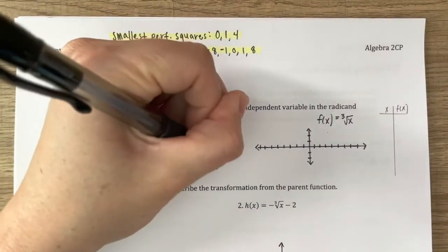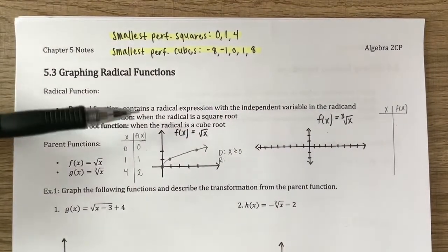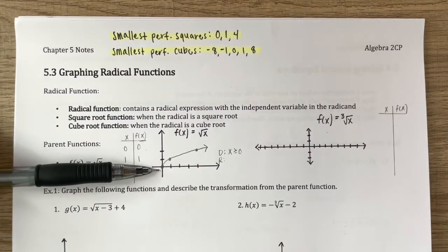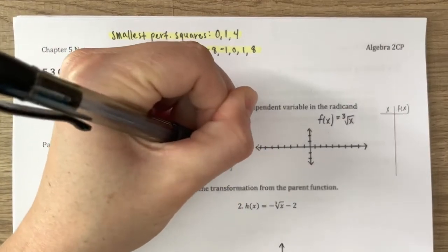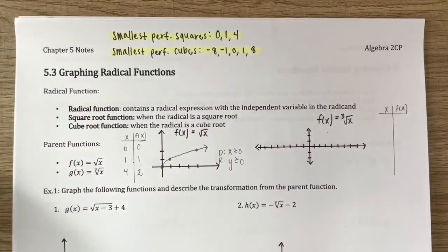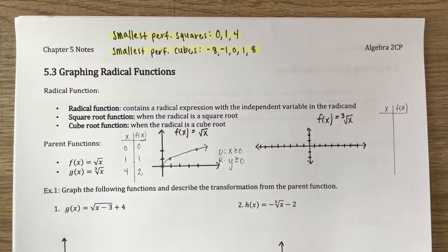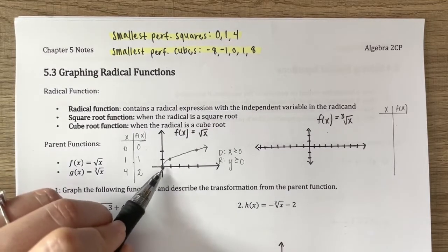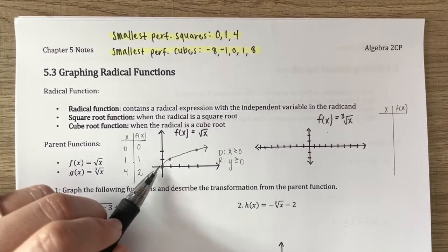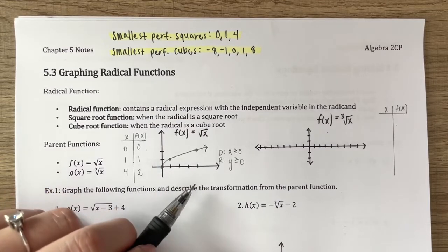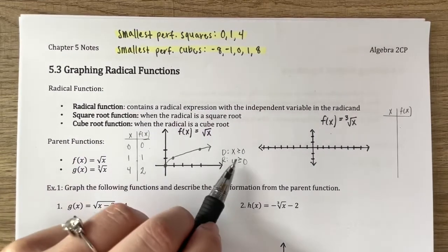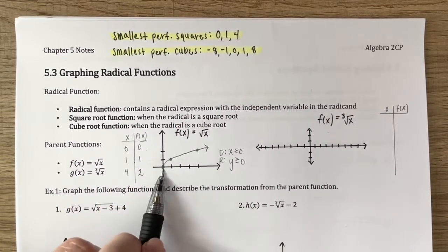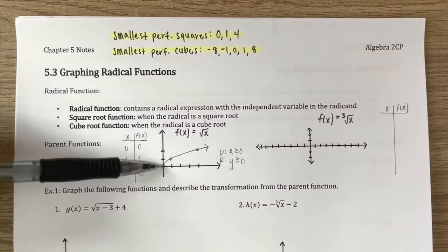The range is also cut off at this point. There's no value I can put in for x where I get a negative y out, so the range has to be y is greater than or equal to 0 as well. Whatever this starting point is on your graph, that's going to tell you where the domain and range are restricted, because there are no points to the left of it and no points below it.